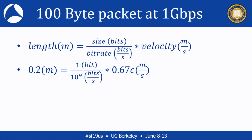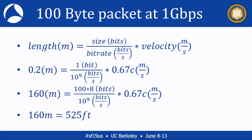If one bit is 0.2 meters long, how long is our 100-byte packet? A 100-byte packet is 800 bits, which works out to 160 meters — about 525 feet. This means that if you have a piece of fiber more than 160 meters long, there's a point in time when you've finished sending the packet into the fiber but it hasn't started arriving at the receiver yet. At that moment, the packet exists purely as a series of light pulses traveling through the fiber.